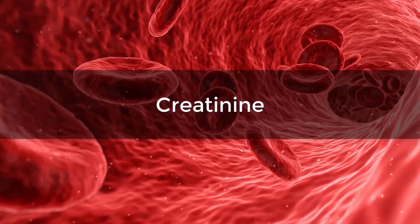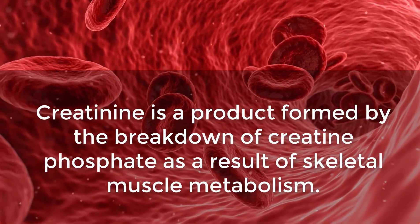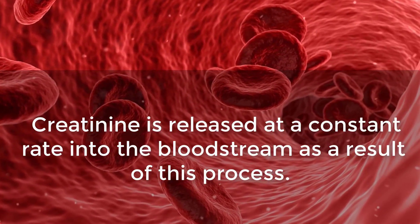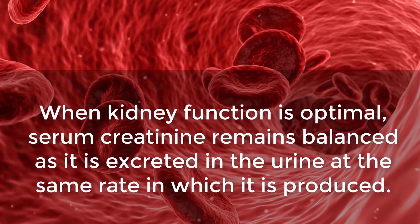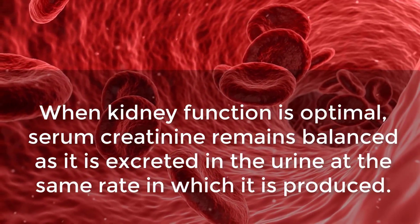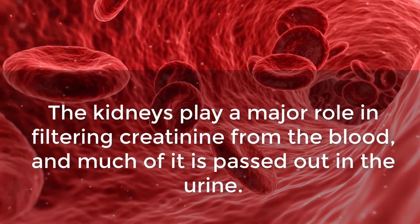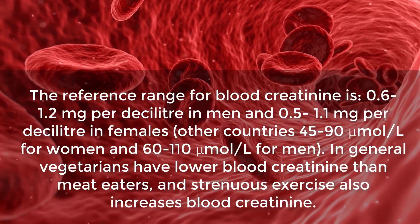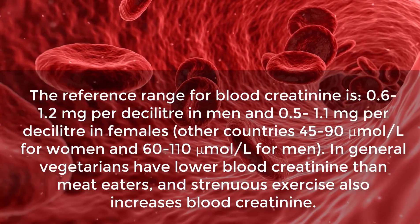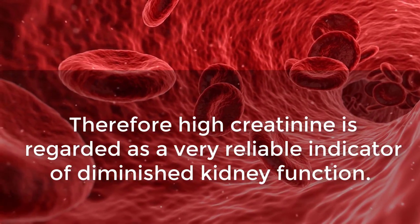Creatinine is a product formed by the breakdown of creatine phosphate as a result of skeletal muscle metabolism. Creatinine is released at a constant rate into the bloodstream. When kidney function is optimal, serum creatinine remains balanced as it is excreted in the urine at the same rate it is produced. The kidneys play a major role in filtering creatinine from the blood, and much of it is passed out in the urine. Creatinine readings work inversely with GFR — if GFR is low, creatinine will be high. Therefore, high creatinine is regarded as a very reliable indicator of diminished kidney function.